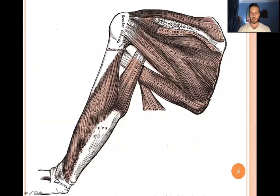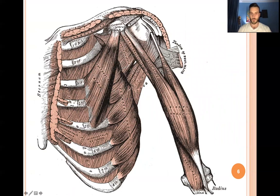Looking at the anatomy: teres minor externally rotates the humerus. We also have the long and lateral heads of the triceps, latissimus dorsi, teres major, infraspinatus as a large muscle in the infraspinous region, and supraspinatus in the supraspinous region — all attached around the shoulder as rotator cuff muscles. Anteriorly, the coracoid process is visible; the long head of the biceps runs over the humeral head attaching to the superior glenoid, while the short head attaches to the coracoid process. The subscapularis is also visible as a rotator cuff muscle.